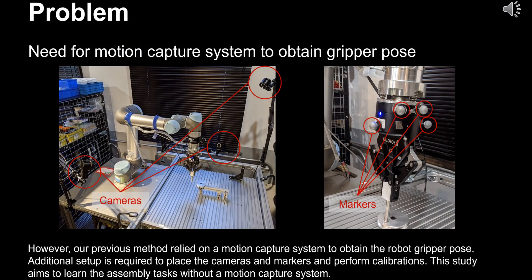However, our previous method relied on a motion capture system to obtain the robot gripper pose. Additional setup is required to place the cameras and markers and perform calibrations. This study aims to learn the assembly tasks without a motion capture system.